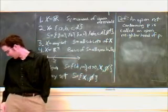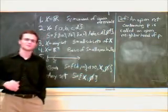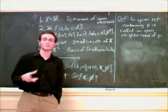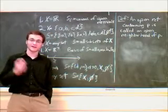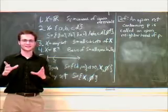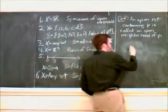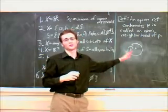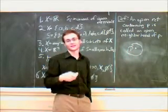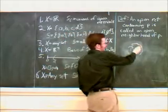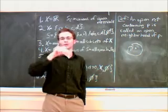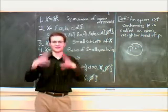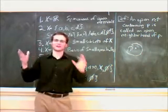That is everything about open neighborhoods of a point. Now, there is an idea of a neighborhood — just a neighborhood of a point, rather than an open neighborhood. The difference is: a neighborhood of a point is a set containing P, and we don't know if it's open or closed. But it's a neighborhood if that set contains an open neighborhood of P. So it's just an extension of an open neighborhood — you take the open neighborhood, and anything that contains it is just a normal neighborhood.